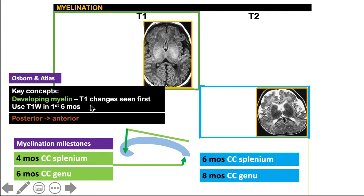This progression agrees with both key concepts: T1 changes occur first, T2 comes later, and myelination proceeds from posterior to anterior. If we remember these concepts and the four-month milestone for the splenium, we can make an educated guess about which area will show T1 and T2 changes next.